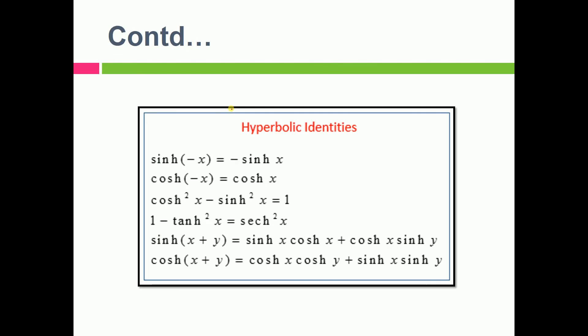And then we have some hyperbolic identities. Sinh(-x) will give you minus sinh x. Cosh(-x) will give you cosh x. So just like we have some trigonometric identities, here we have some hyperbolic identities.